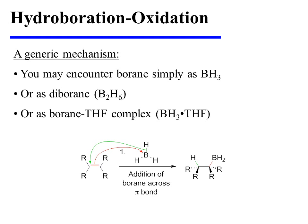You may encounter borane simply written as BH₃, but you may encounter it in other forms as well. Diborane, or B₂H₆, is an alternative source of borane, as is a borane-tetrahydrofuran (THF) complex. These alternative sources of borane ultimately lead to the same hydroboration product.